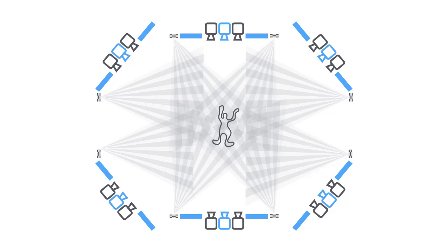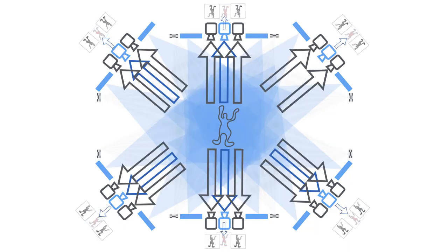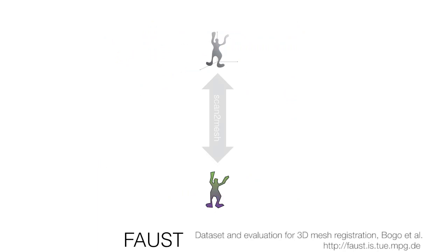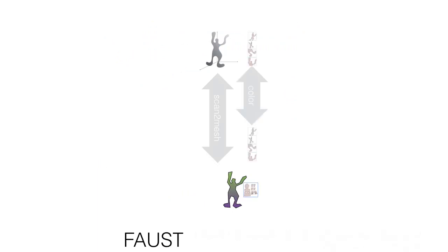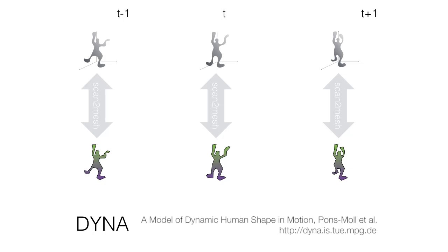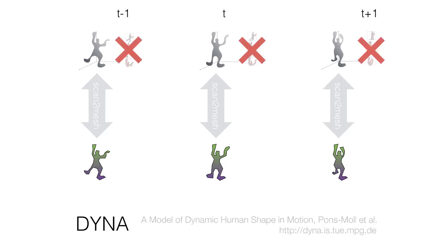The question is, how can we exploit all this data to obtain accurate registrations? In previous work, FAUST registers the geometry and images of a scan to a common template. Since the subject is static, the delay between image and geometry capture has no effect. Considering bodies in motion, DINAH exploited the scan geometry but disregarded the images from the scan due to the delay between color and geometry.